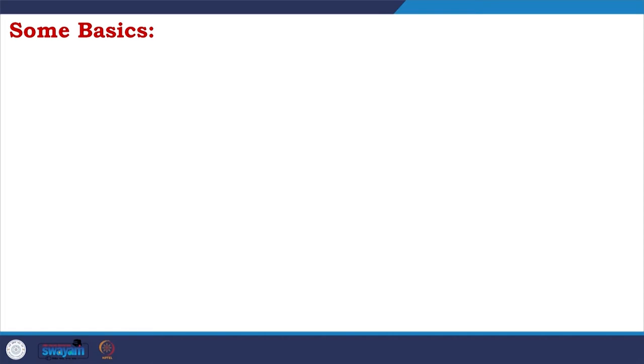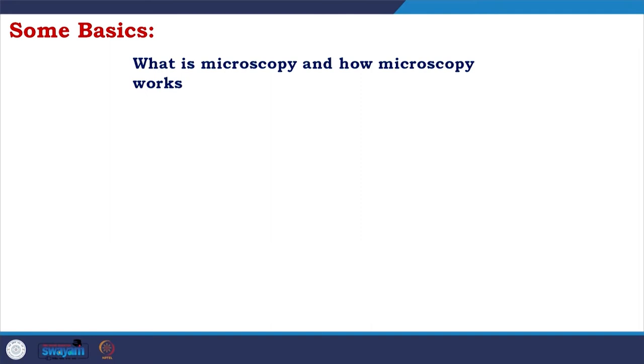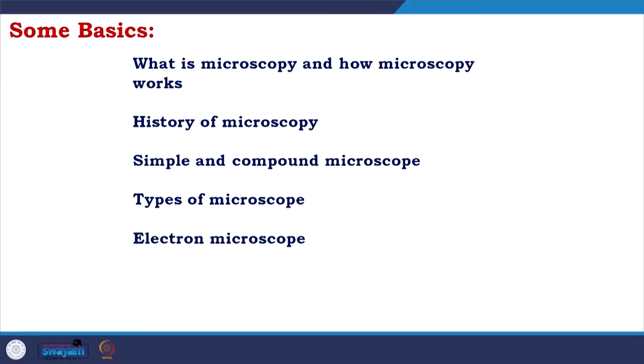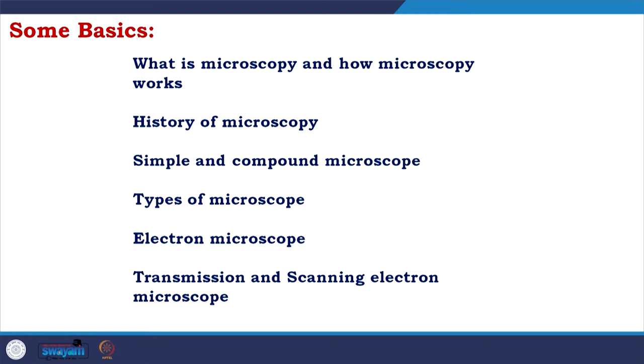For newcomers, we will cover what microscopy is and how it works, the history of microscopy, how it developed from the light microscope to the electron microscope, and then to the cryo electron microscope. We will discuss simple and compound microscopes, and types of electron microscopes — specifically transmission and scanning electron microscopes.